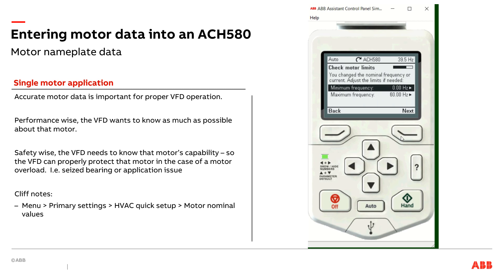If I wanted to put some limits on my motor — maybe I don't want my motor to go below 15 hertz, or above 60 hertz in this application — I can put limits here. Those are optional based on the application needs.